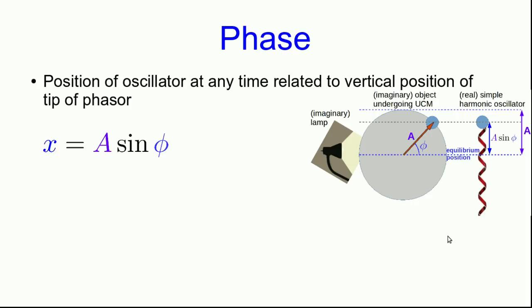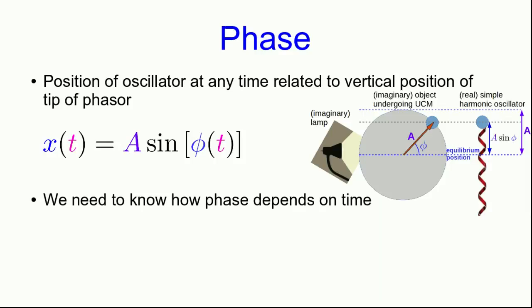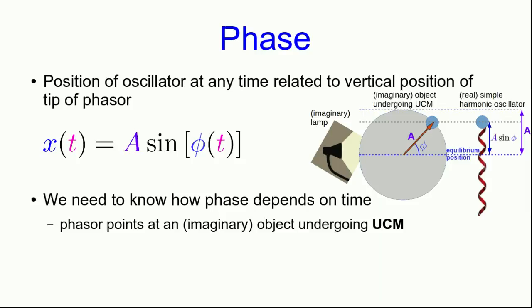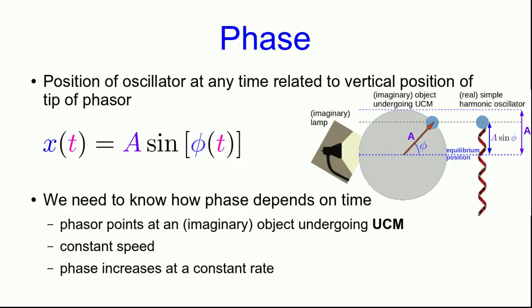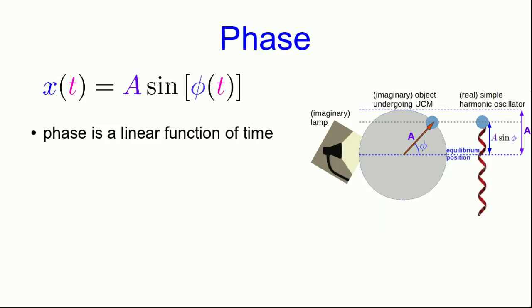The position x is just A sine phi, and A is a constant. All we need to do to figure out position as a function of time is figure out how the phase varies with time. The phasor points at an imaginary object undergoing uniform circular motion — uniform circular motion, meaning constant speed — so the phase phi must increase at a constant rate, making it a linear function of time.